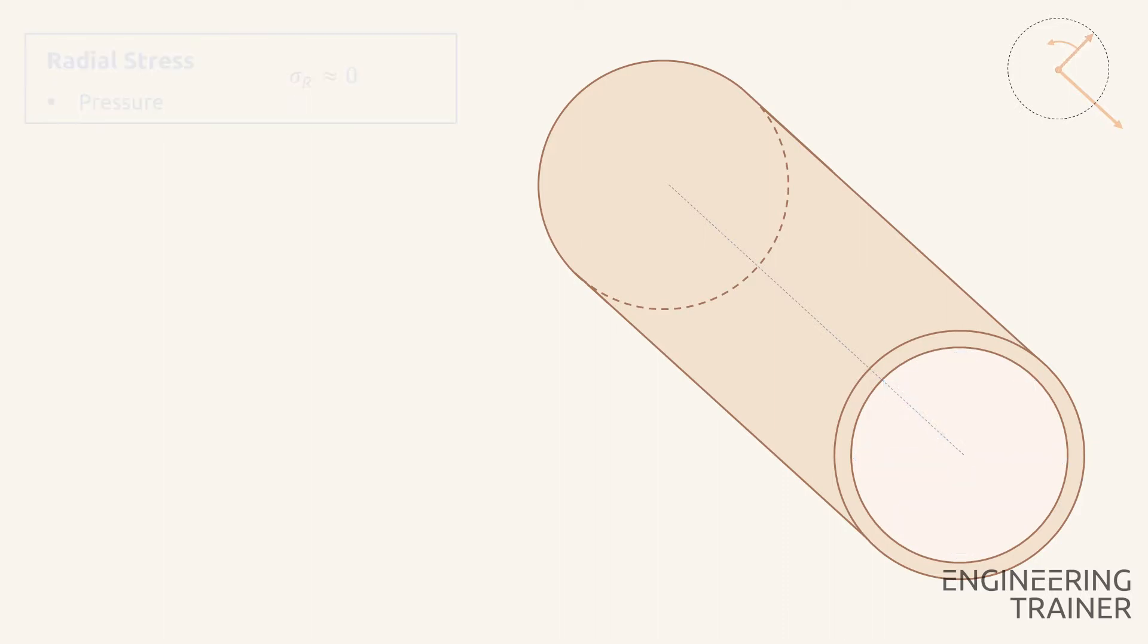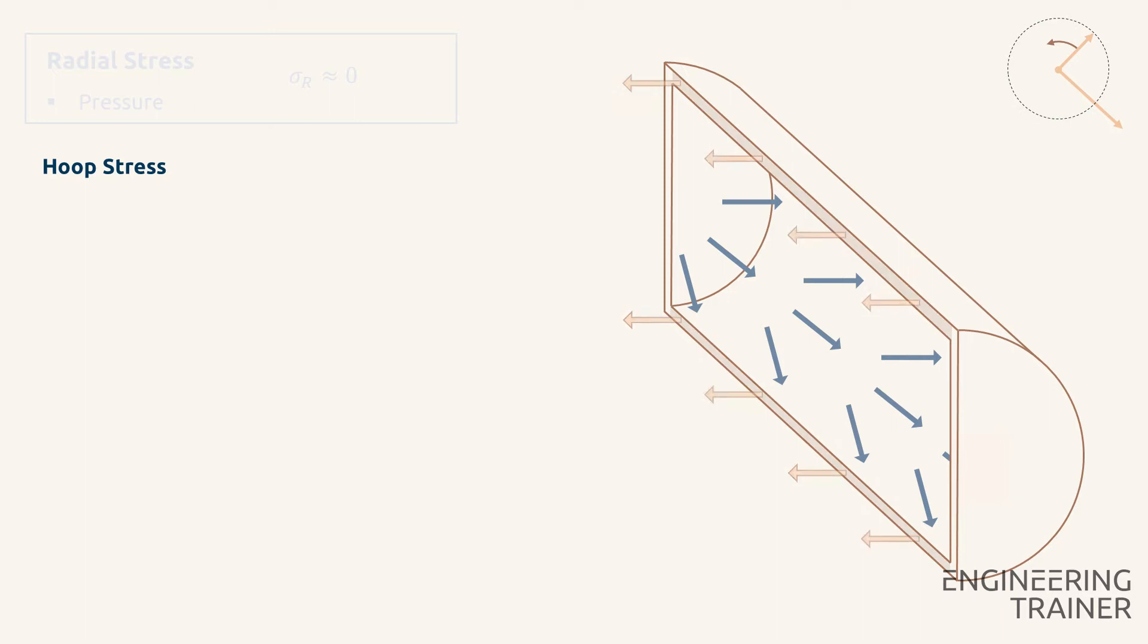Next, let's evaluate the hoop stress. The pressure causes a hoop stress that is calculated by PD over 2T. Also for the hoop stress, it is the pressure only that contributes. No other load causes an overall stress in the circumferential direction to a piece of piping.